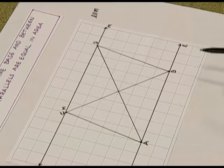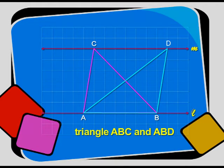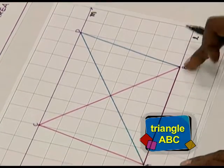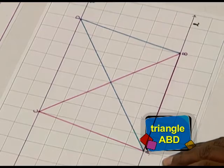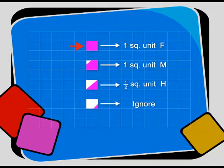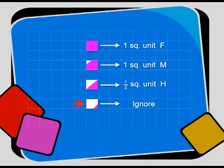We have to verify whether the areas of these two triangles are equal. We find the area by counting the squares. The squares which are fully covered we take as one square unit, indicated by F. Squares covered more than half are also counted as one square unit, indicated by M. Squares that are exactly half covered are indicated as half square unit, indicated by H. Squares less than half covered are ignored.